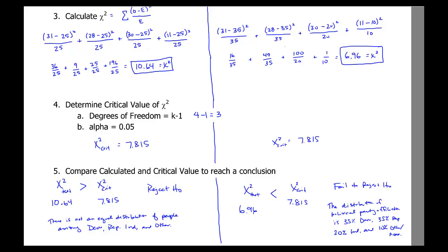So now we have an example of a goodness of fit test where all the groups are equal, and an example where you're fitting it to an expected set of percentages for each category.